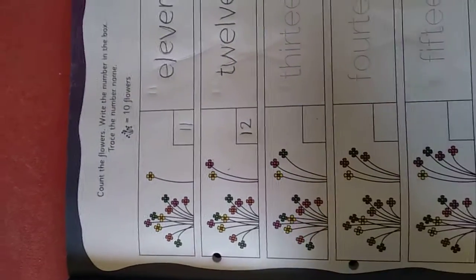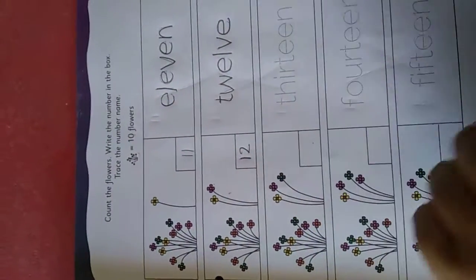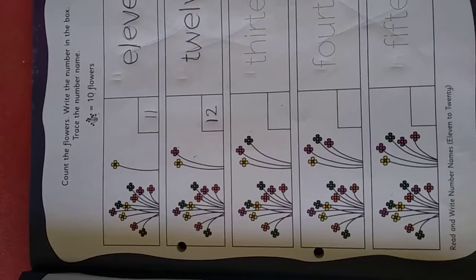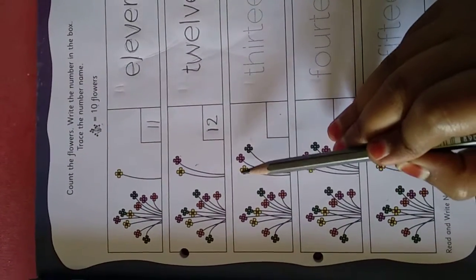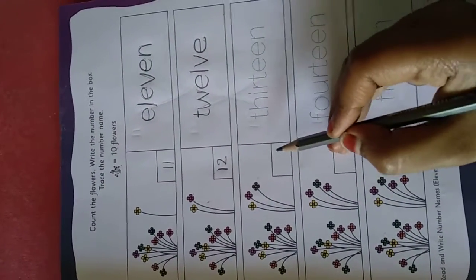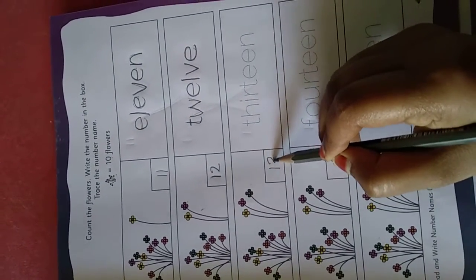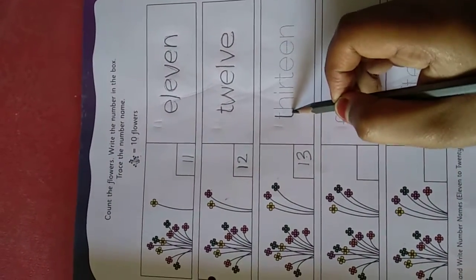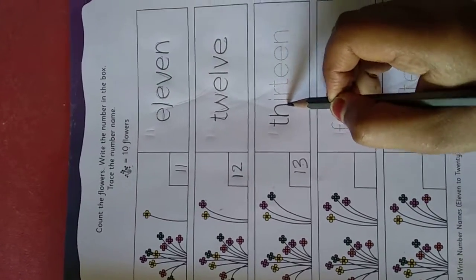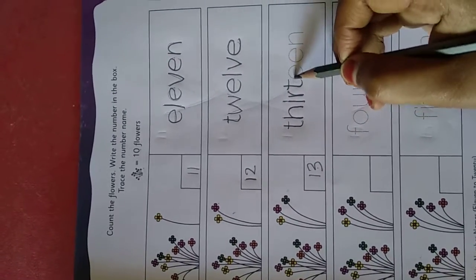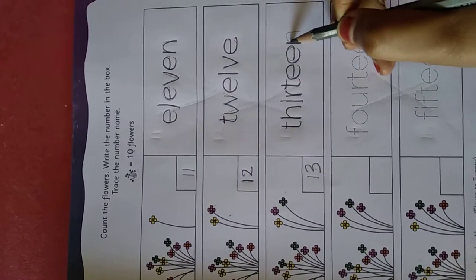So come to the third box. Here again there is one bunch of flowers and 3 more flowers are there. In one bunch there are totally 10 flowers. So 10, 11, 12, 13. So in this box how many flowers are there? Totally 13 flowers. So write 13, and trace the 13 spelling. T-H-I-R-T-E-E-N. 13.